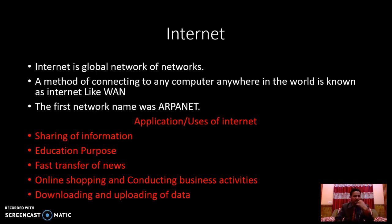The next part is internet. Internet is a global network of networks, in which multiple networks are used to exchange information worldwide. A method of connecting to any computer anywhere in the world is known as the internet. An example is WAN. The first network designed was called ARPANET, which stands for Advanced Research Project Agency Network, and it was designed by the Department of Defense. The agency was DARPA.